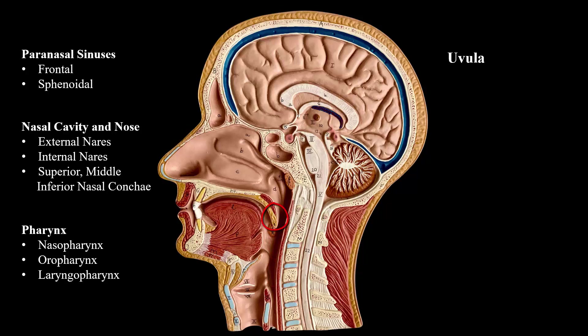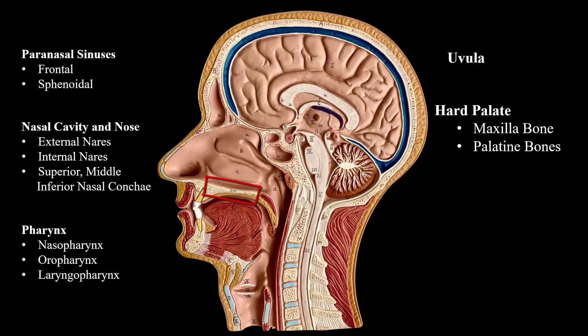We have the uvula, which hangs off of the soft palate. The hard palate is going to be made up of the maxilla bone and the palatine bone.